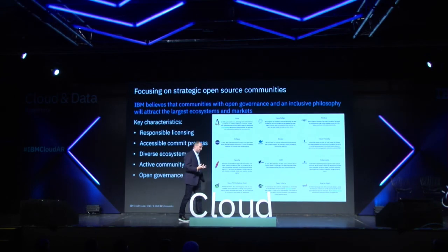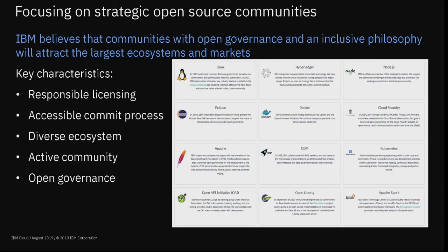We have groups in IBM whose focus is upstream open source projects — to contribute code and make sure we've got the right focus around things like documentation and user experience. It's not just the technology. The technology is great, but if it's not consumable, upgradable, secure, and performant, then it's really of no use. So we think about whether we are doing so in a model that has responsible licensing. We don't want to be too restrictive; we want to allow the power of these projects to be consumed by a lot of different teams, because that adoption and multiple teams leveraging it is where they continue to grow and evolve.